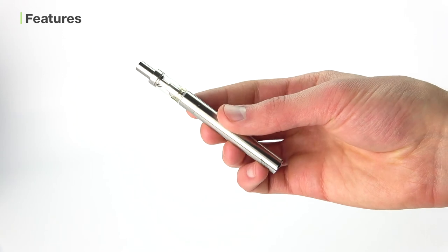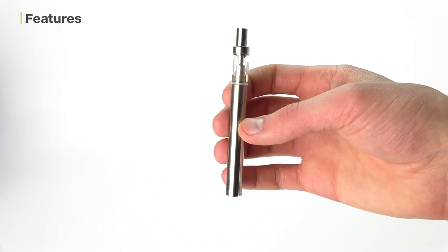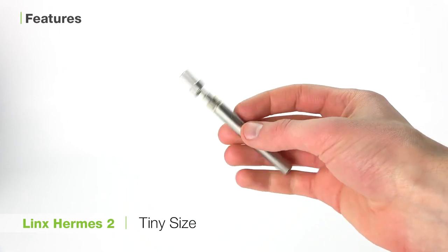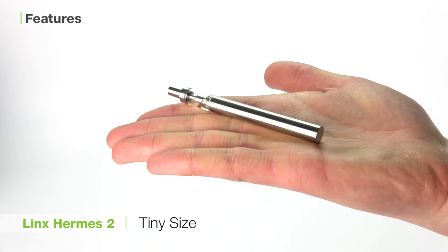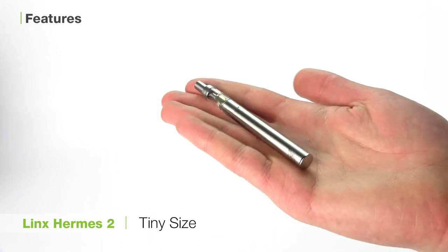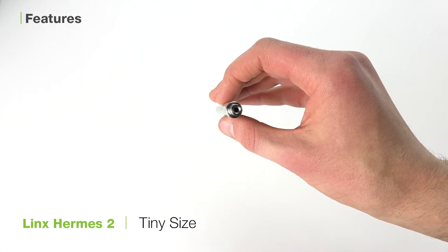To wrap this one up, let's talk about some of the key features of the Lynx Hermes II which make it such a notable device. The first is the tiny size of the Hermes II. At just under 5 inches tall, not even an inch wide, and weighing just 28 grams, it'll easily fit in the palm of your hand for maximum portability and discreteness.